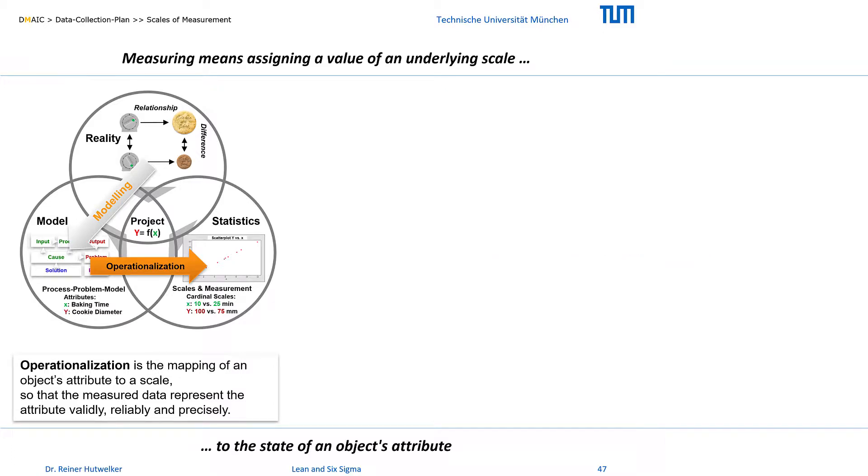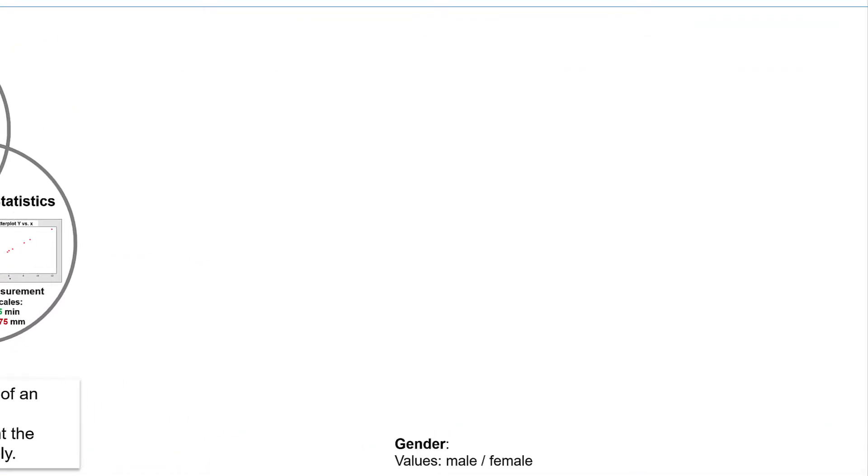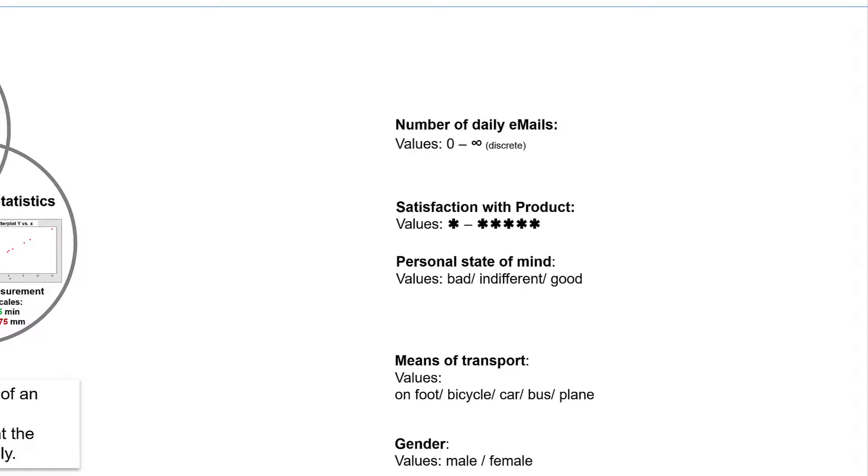We measure daily, we are informed about measurements and we are measured ourselves without always being aware of it. We categorize our conversation partner as male or female and choose one of our available means of transport. We award five stars for the evaluation of a product and feel personally good, indifferent or bad. We see the number of emails in the inbox and determine our punctuality to an appointment.